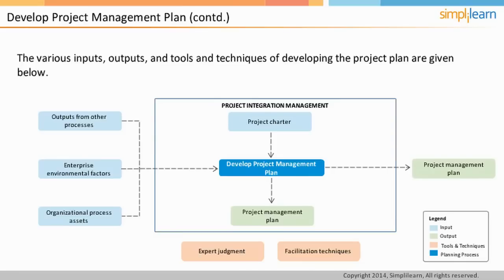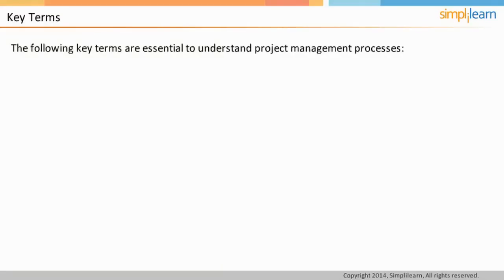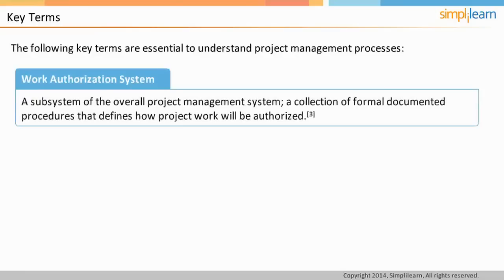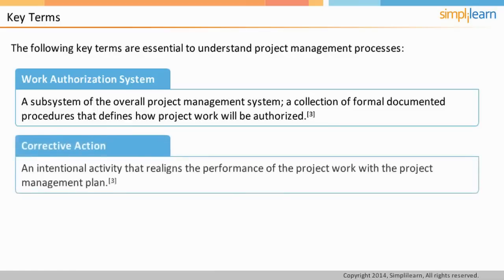Let us look at a few key terms to understand project management processes. The first is the work authorization system — there should be a formal process of authorizing work within the project. So whether it is internal team members or project contractors, there should be a formal process of giving go-ahead to start work on the project. The next two related terms are corrective and preventive action. Corrective action is any action taken to bring expected future project performance in line with the project management plan. For example, if a project milestone is delayed, as a corrective action, you include additional resources to ensure that the final project deadline is not delayed.